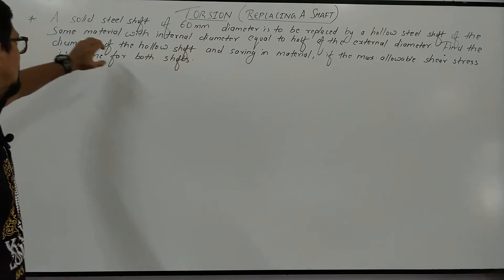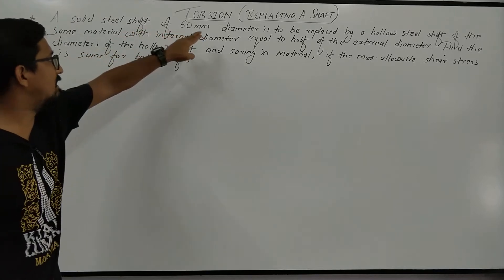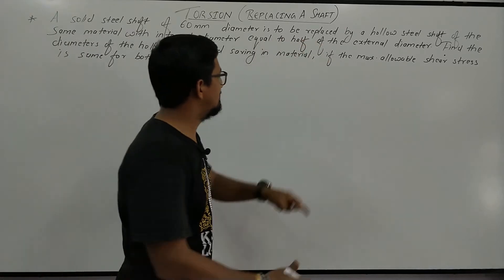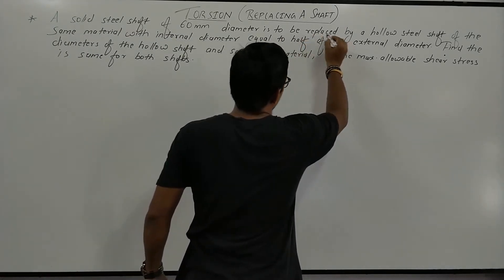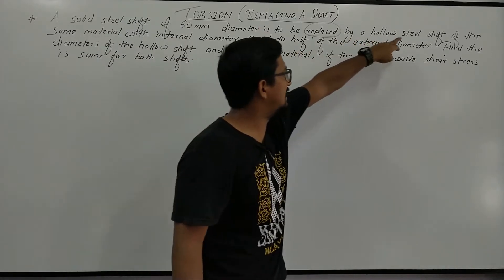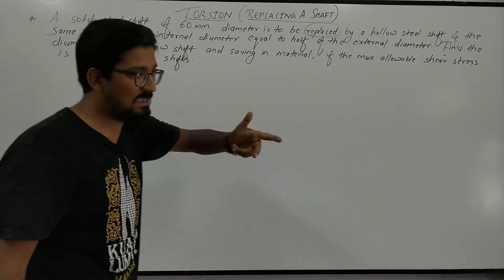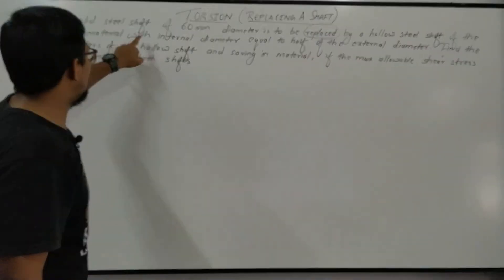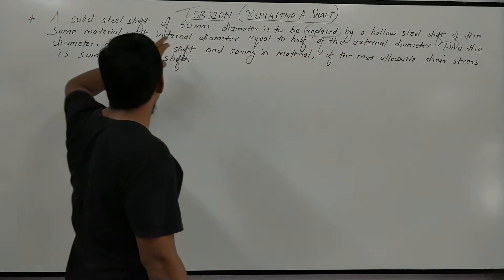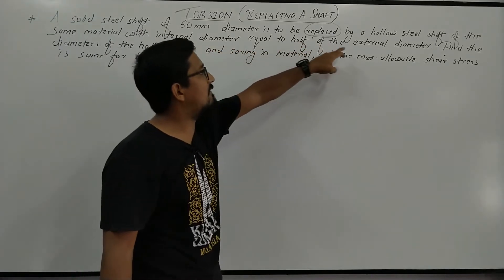Let us approach the numerical. The problem is: a solid steel shaft of 60 mm diameter is to be replaced by a hollow steel shaft of the same material, with internal diameter equal to half of the external diameter.